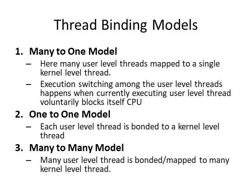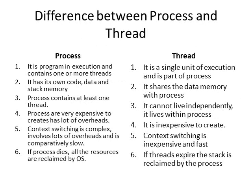So, these are the things related to thread preemption. Thread preemption is the sharing of CPU time amongst different threads, similar to process preemption. Context switching depends on the types of threads — user-level threads and kernel-level threads — and these can be mapped using the binding models: many-to-one, one-to-one, and many-to-many. Now we also need to see the concept of the difference between process and thread, which can be asked as a separate exam question.